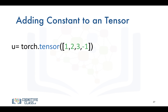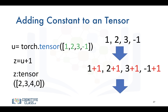We can also add a constant term to a tensor — this is called broadcasting. We have tensor U, and we add 1 and assign it to tensor Z, which simply adds 1 to every element in the tensor. This can get pretty complex, so in the notebook I've included a link to a helpful NumPy broadcasting tutorial.